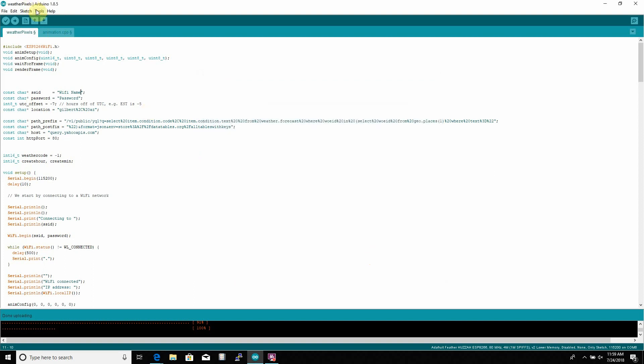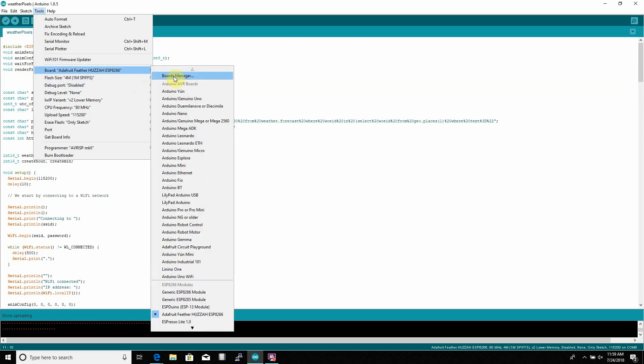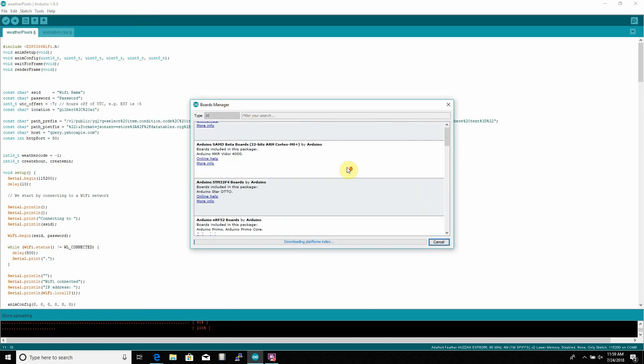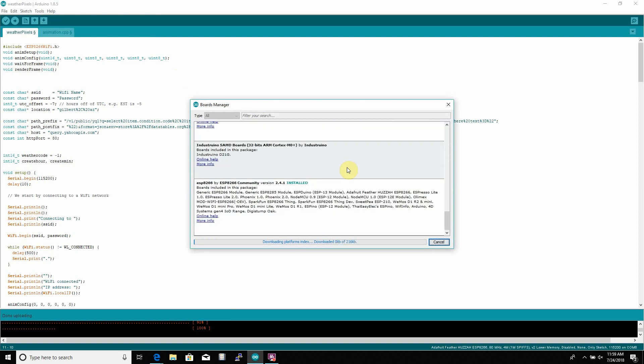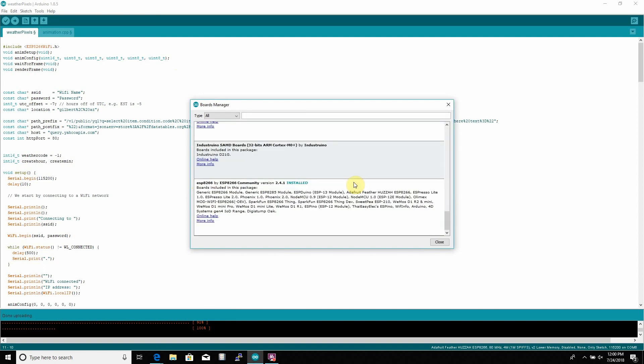Next, once that link's in there, we go to Board, Boards Manager, and once it loads all the platforms, you'll see one called ESP8266. This is the one that allows us to use the NeoPixel ring with the Feather Huzzah.